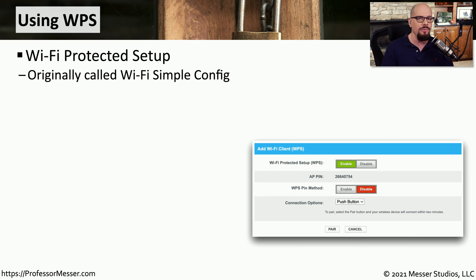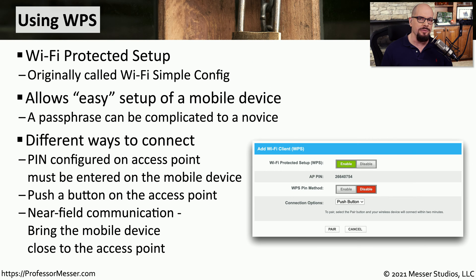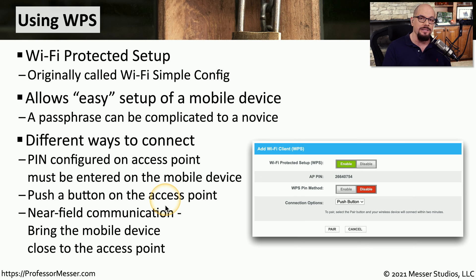To make this process easier for administrators and users, a type of authentication was created called WPS — Wi-Fi Protected Setup, formerly called Wi-Fi Simple Config. The idea is that it would be much easier to use WPS rather than pre-shared keys or 802.1x. WPS allows different methods for authentication: you could use a personal identification number entered into the mobile device, push a button on the access point while configuring your wireless device, or bring the wireless device close to the access point to transfer information using Near Field Communication, or NFC. With WPS, users don't have to remember a pre-shared key or configure 802.1x authentication.